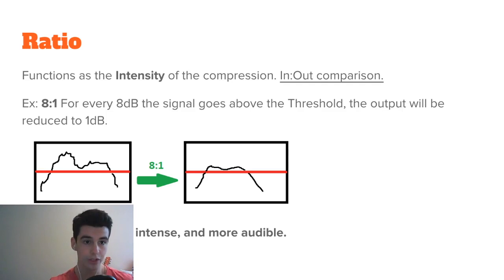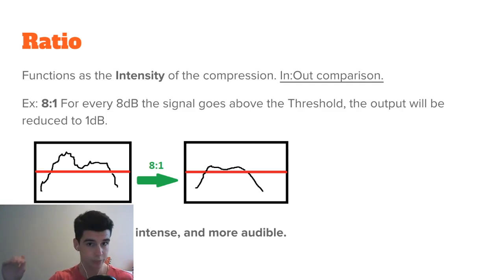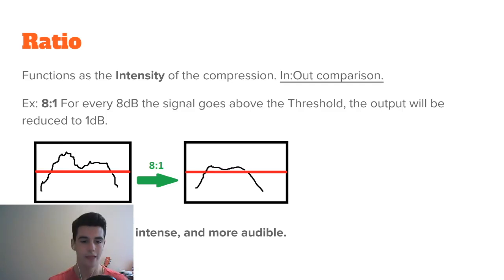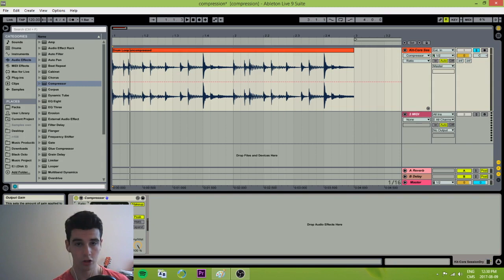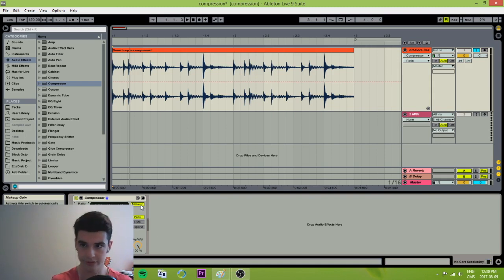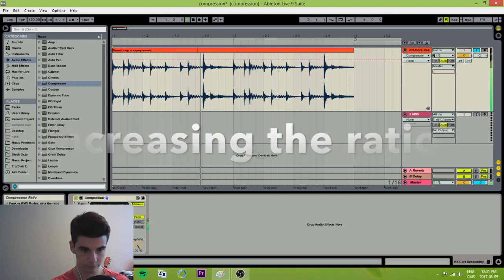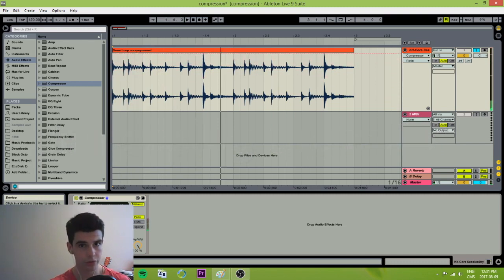Let's talk about the ratio now. The ratio functions as the intensity of the compression — it's kind of like an in-out comparison. For example, in the case of 8 to 1, for every 8 decibels the signal goes over the threshold, the output will only be reduced to 1 decibel, as you can see in the image right here. A higher ratio will be more intense and more audible. Let's start at a ratio of 2 to 1 and slowly put the ratio up so you can hear the effects of it. Makeup gain is on so it's going to stay at a pretty consistent volume. The higher the ratio, the more it's going to act like a limiter.